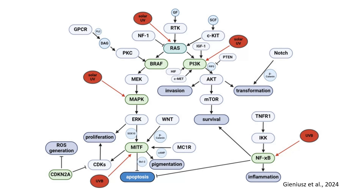In summary, this diagram shows how multiple molecular pathways — RAS, MAPK, PI3K, NFKB, and others — are interconnected. These pathways collectively drive melanoma development by promoting inflammation, cell survival, proliferation, and resistance to apoptosis.